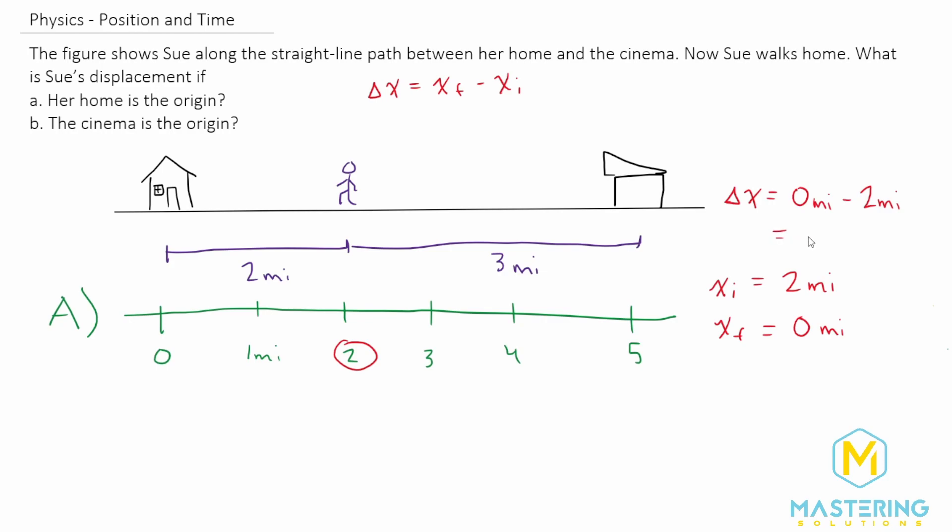So that gives us negative two miles, meaning she moved in the negative x direction, two miles.